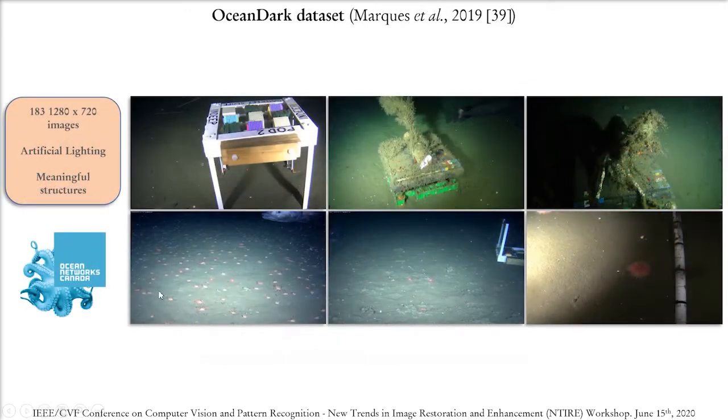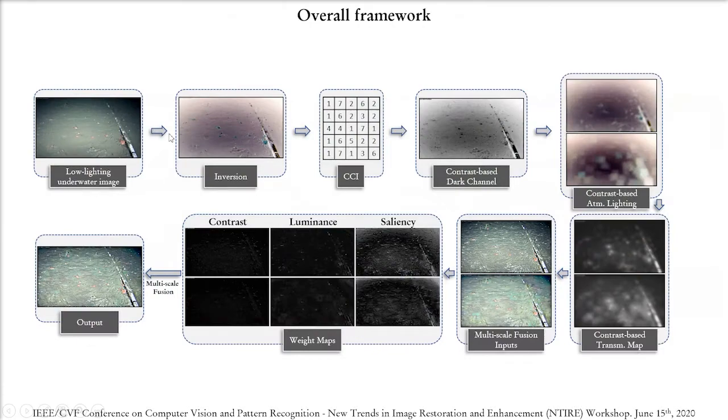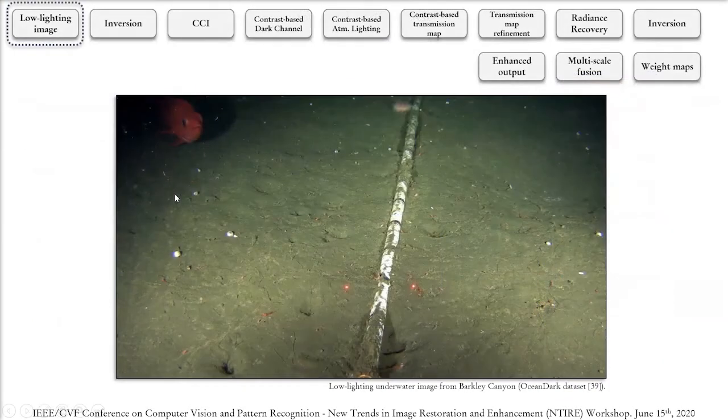In 2019 we offered the OceanDark dataset composed by 183 low-lighting underwater images captured using data from Ocean Networks Canada. Our framework starts with a low-lighting underwater image such as this one from the OceanDark dataset.